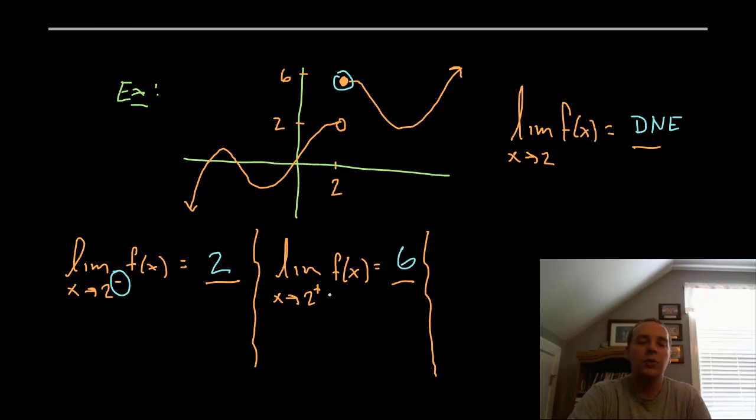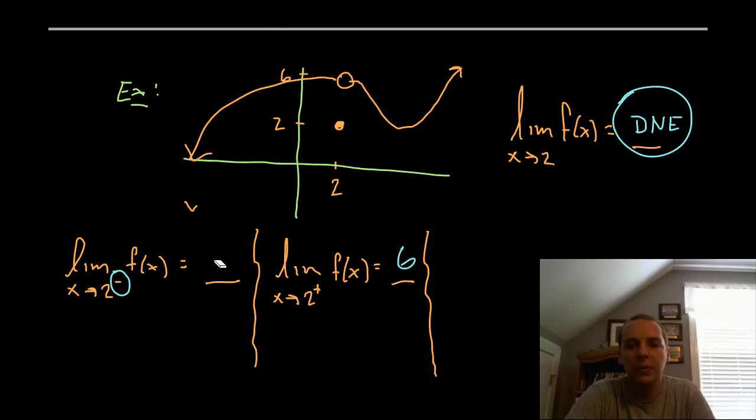So you can have one-sided limits exist and the overall limit not exist. Now the notion of a one-sided limit actually makes it very clear when an overall limit will exist. And it's very simple. You need the left-hand and the right-hand limits to match. I'll tell you what, let me modify this example on the fly here a little bit. I'm going to tweak this. Let's say that's an open dot. Let's say this is closed dot here. So for this example here, let's just redo it really quickly.